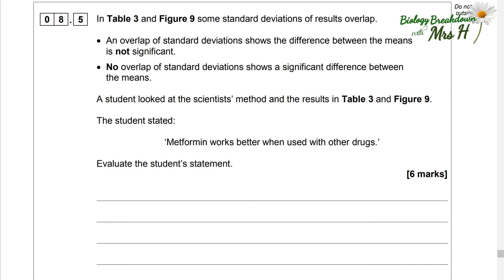In table three and figure nine, some standard deviations of results overlap. An overlap of standard deviations shows the difference between the means is not significant. So even if you've got a difference, the difference isn't significant. No overlap of standard deviations shows a significant difference between the means. A student looked at the scientist method and the results in table three and figure nine, and the student stated metformin works better when used with other drugs.